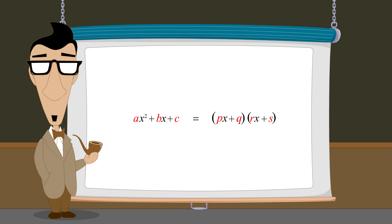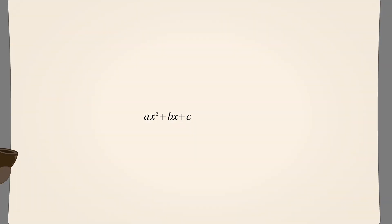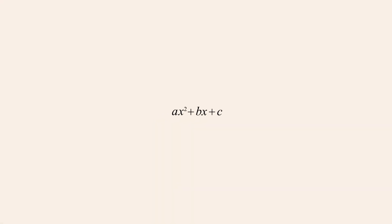In this lecture, we will see how to factor a quadratic by inspection when the coefficient of x-squared is not one. As in the previous lecture, we will assume that the quadratic expression has been put into general form where a, b, and c are integers.